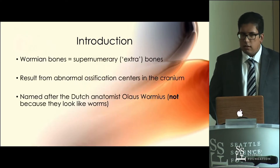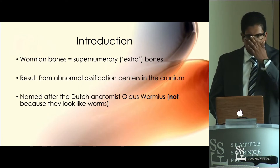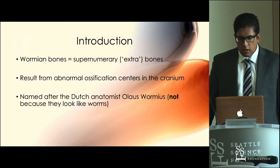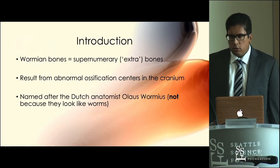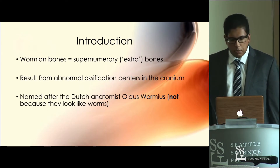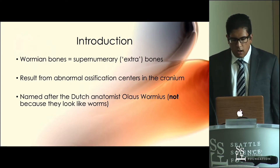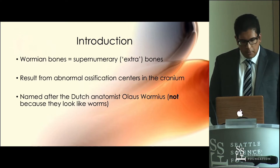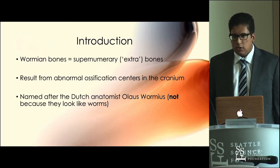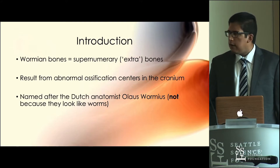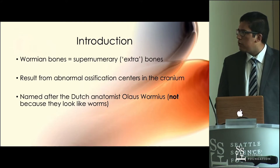The clinical deformity we're talking about today is wormian bones. Wormian bones are basically supernumerary, or extra, bones within the skull that aren't supposed to be there. Their underlying etiology is from abnormal ossification centers, though we don't really know why these ossification centers form. They're usually found in the suture lines of the bones.